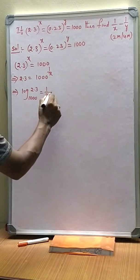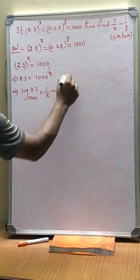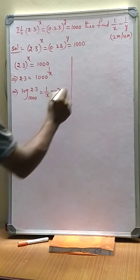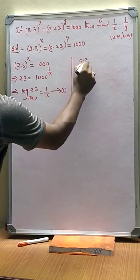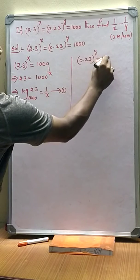Good. Now let us take it as equation 1. Now let us equate 0.23 to the power of y equals 1000.